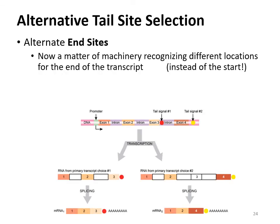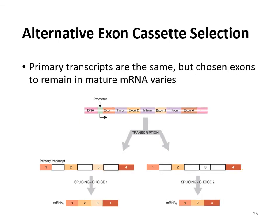Alternative tail site selection means within a single gene there might be more than one tail signal or end site, so you can end up with different RNA depending on which tail site is selected. With alternative exon selection, depending on how the spliceosome is moving, you may end up losing some exons and getting a slightly different protein. For microbiology purposes, just know that these three forms of alternative splicing exist — alternative promoter, tail site, or exon selection.